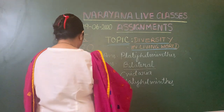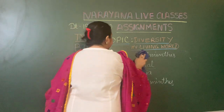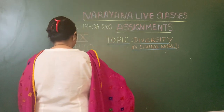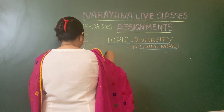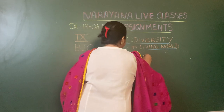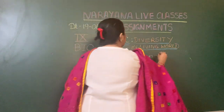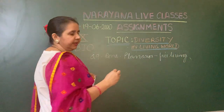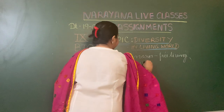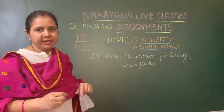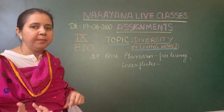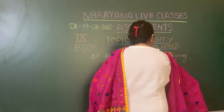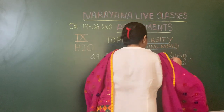Question number nine asks: give one example of a free living flat worm and a parasitic Platyhelminthes. The answer: planaria is a flat worm and is the example of a free living Platyhelminthes. A parasitic Platyhelminthes is the liver fluke. As the name suggests, it is basically a parasite of the liver in most mammals as well as humans, living inside the liver.